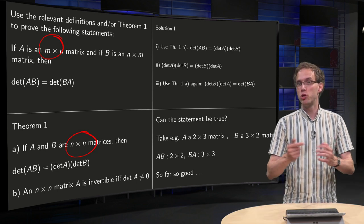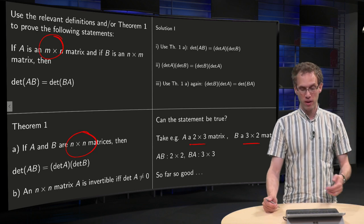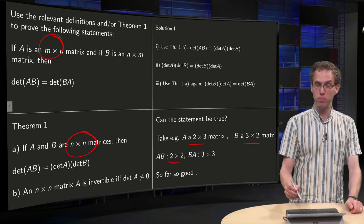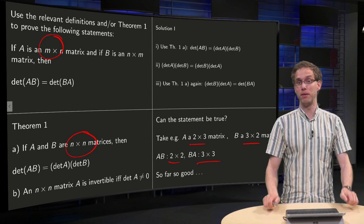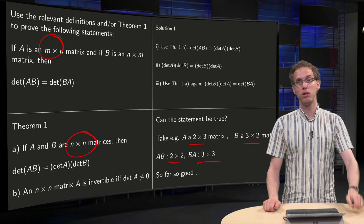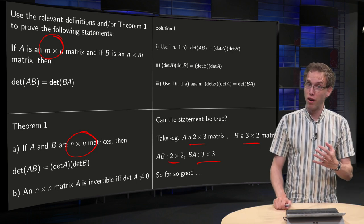So can it be true at all? Well, take for example A 2 by 3 and B 3 by 2. So AB will give us a 2 by 2 matrix and BA is a 3 by 3 matrix. So we will end up with square matrices. So we can compute those determinants. At least the products are square. So far so good.